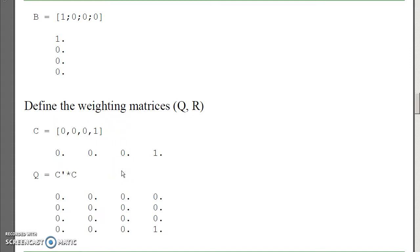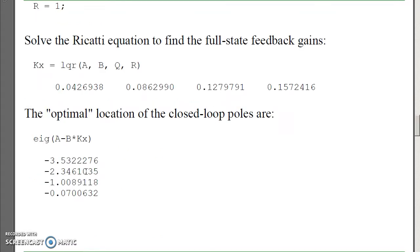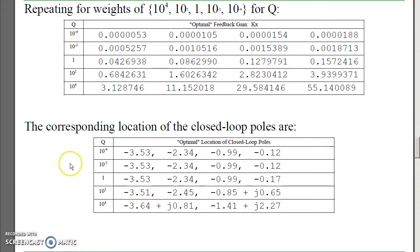To find the output weighting: my output y is c times x, so Q is just c-transpose c — that weights y squared. R is 1. If I solve the algebraic Riccati equation — in MATLAB that's just the function LQR, calling kx = lqr(a, b, q, r) — it gives me the feedback gains. That means the optimal feedback gains given my cost function place the poles at this optimal location.